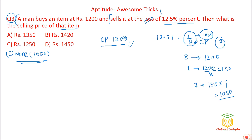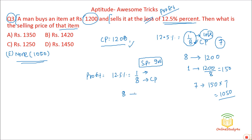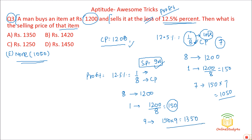The same problem can be asked in terms of profit. A man buys at Rs. 1200 and sells at a profit of 12.5%. 12.5% = 1/8. Buying at 8, selling at a profit of 1 means the selling price is 9. Since 8 = 1200, 1 = 150. So 9 = 150 × 9 = Rs. 1350. In case of profit, the answer is Rs. 1350.